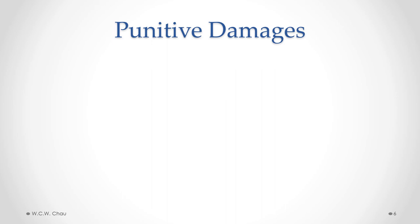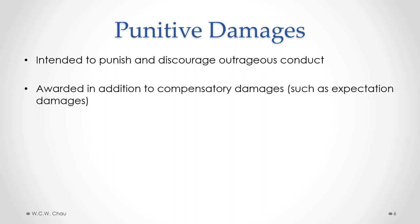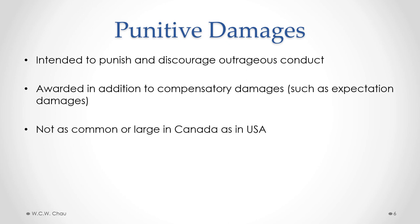Damages, such as expectation damages, are usually meant to compensate the innocent party for their losses. An exception to that rule is punitive damages. Punitive damages are intended to punish and discourage outrageous conduct. An award of punitive damages is in addition to compensatory damages such as expectation damages. The award of punitive damages by a court is not that common in Canada as it is in the U.S.